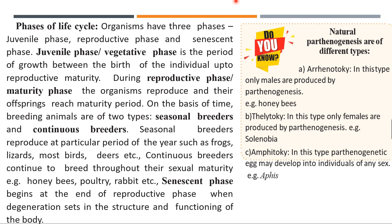Sexual reproduction involves the fusion of male and female gametes to form a diploid zygote — this process is called syngamy or fertilization. External fertilization occurs in sponges, fish, and amphibians. Internal fertilization occurs in reptiles, birds, and mammals. The different kinds of syngamy include autogamy, exogamy, hologamy, pedogamy, oogamy, isogamy, and anisogamy. Conjugation occurs in bacteria and Paramecium.